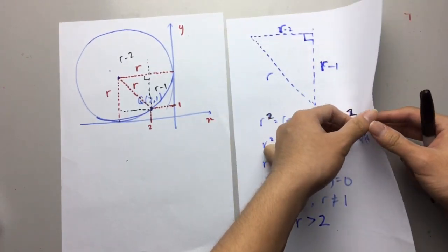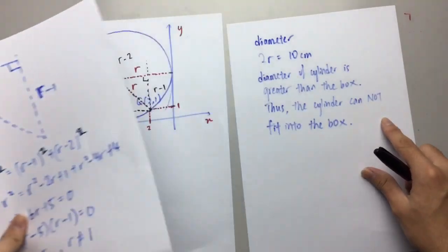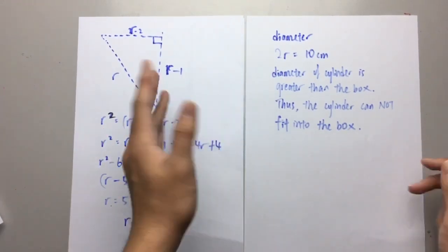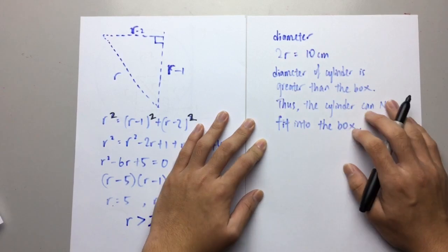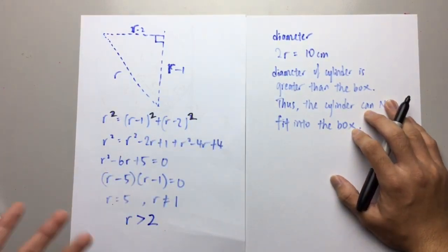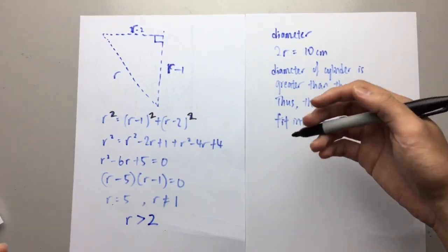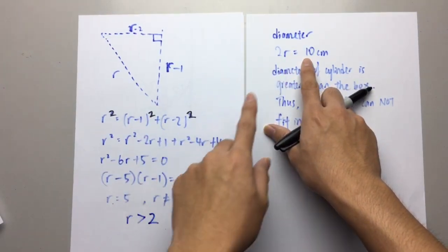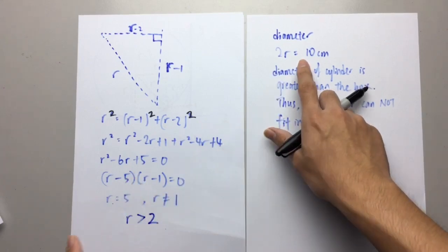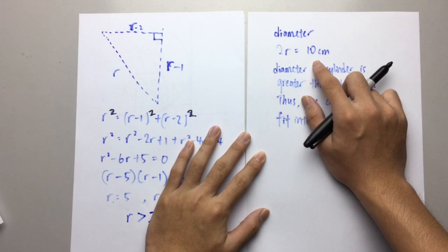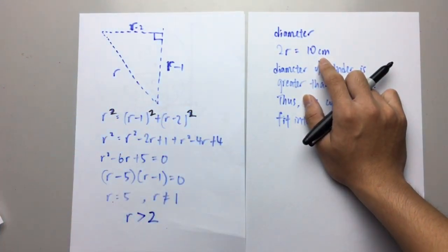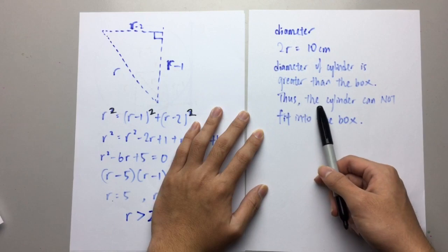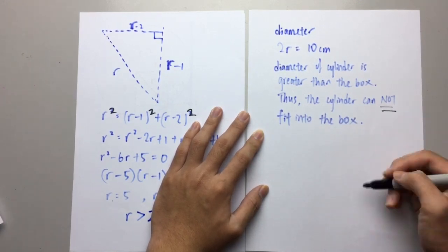The last step is to give a conclusion. We don't calculate the volume — we just use a simple approach using the diameter. Since r equals 5, the diameter is 5 times 2, which equals 10. So as the diameter is 10, it is clearly more than the 7 cm of the given box. We can conclude that the diameter of the cylinder is greater than the box, and thus the cylinder cannot fit into the box.